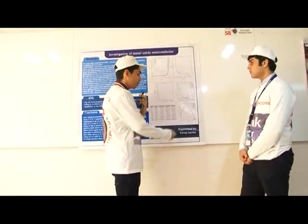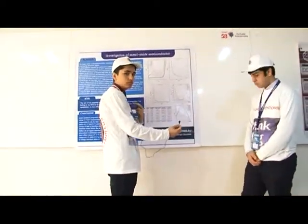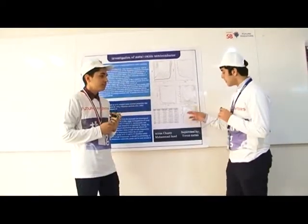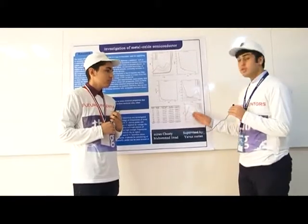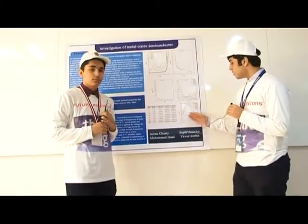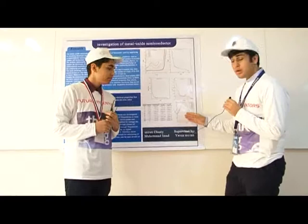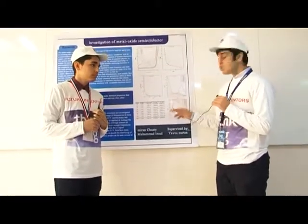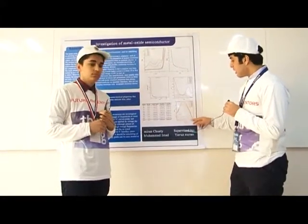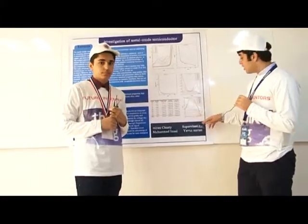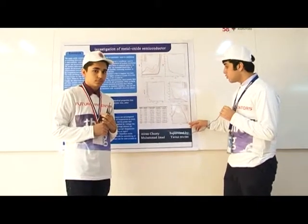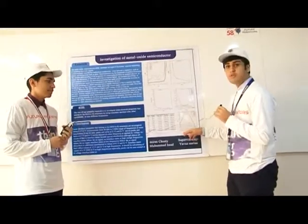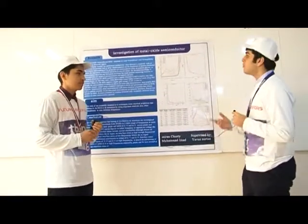The third one is the capacitance. We can separate it into three different regions. The first one is called accumulation, which means the raising of the graph. The second one is depletion, which means the graph comes down. And the third one is inversion, which means changing the N-type silicon to P-type. The voltage range is from negative four to positive four volts. That's our project — hope you enjoy it.